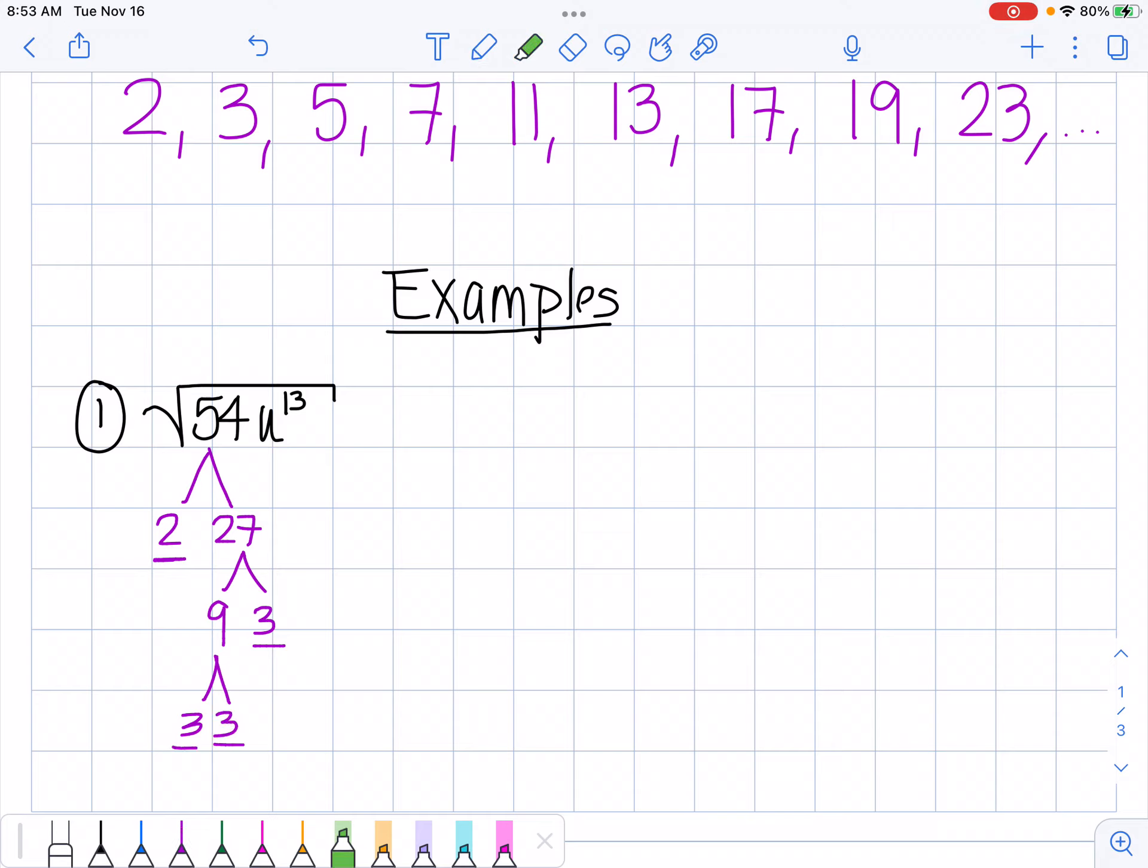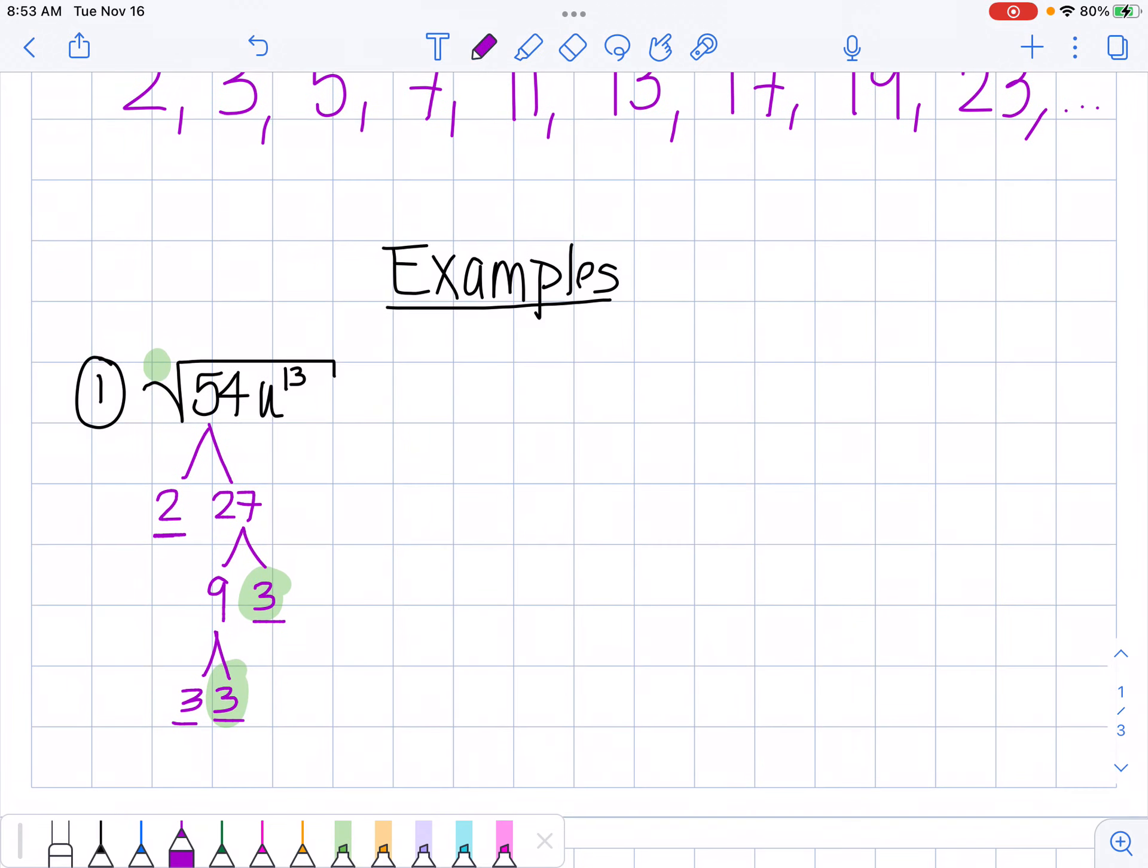Now because this is a square root and the number right here is really a 2 even though it's not written, I have to have 2 of a kind of the same prime number in order to remove it from my square root. So I have a pair of 3's. What happens is I can take a 3 out, and then these guys right here, this 3 and this 2, go back in because they don't have any matches. So I have 3 times 2.